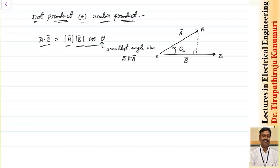This angle we have to take as the smallest angle between vector a and vector b. It indicates what is the magnitude of projection of a in the direction of b. From b you draw a perpendicular bisector, that will intersect vector a at the tip. This indicates the projection of a on b, which is a cos theta, and that you are multiplying with the magnitude of b. That gives the projection of a in that direction.